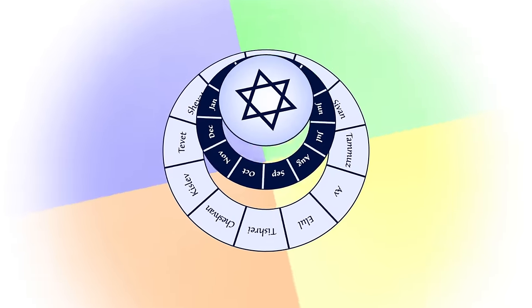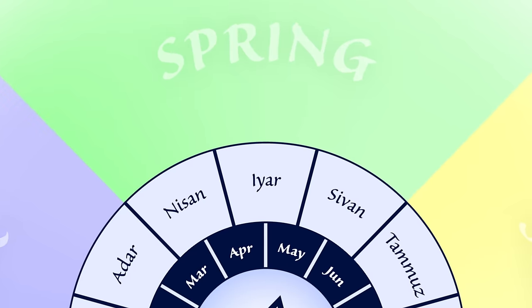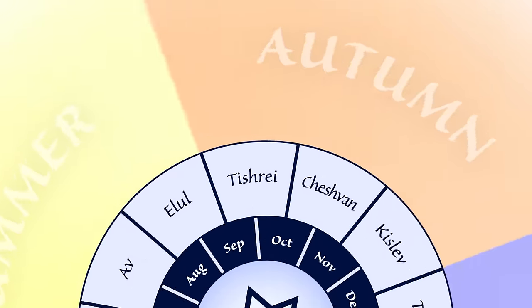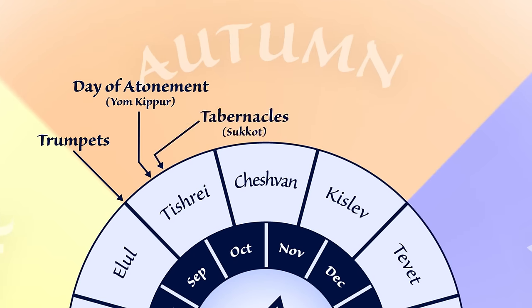The feasts can be grouped into two categories, the spring holy days and the autumn holy days. The spring feasts include Passover, Unleavened Bread, First Fruits, and Pentecost. The autumn feasts include the Feast of Trumpets, the Day of Atonement, and Tabernacles. You may have heard these feasts called by other names, which we'll mention later on.